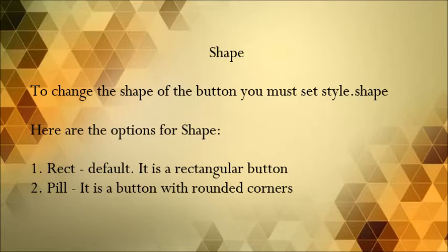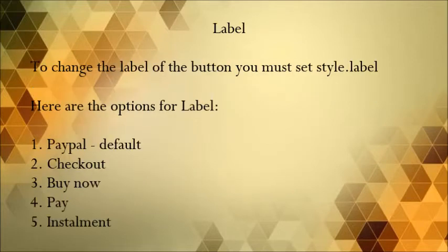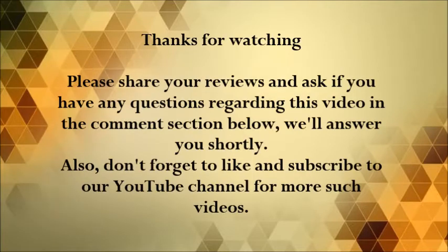Shape: to change the shape of the button, you must set style dot shape. Options for shape: rect (default) — a rectangular button; pill — a button with rounded corners. Level: to change the level of the button, you must set style dot level. Options for level: People (default), checkout, buy now, peep, and installment.